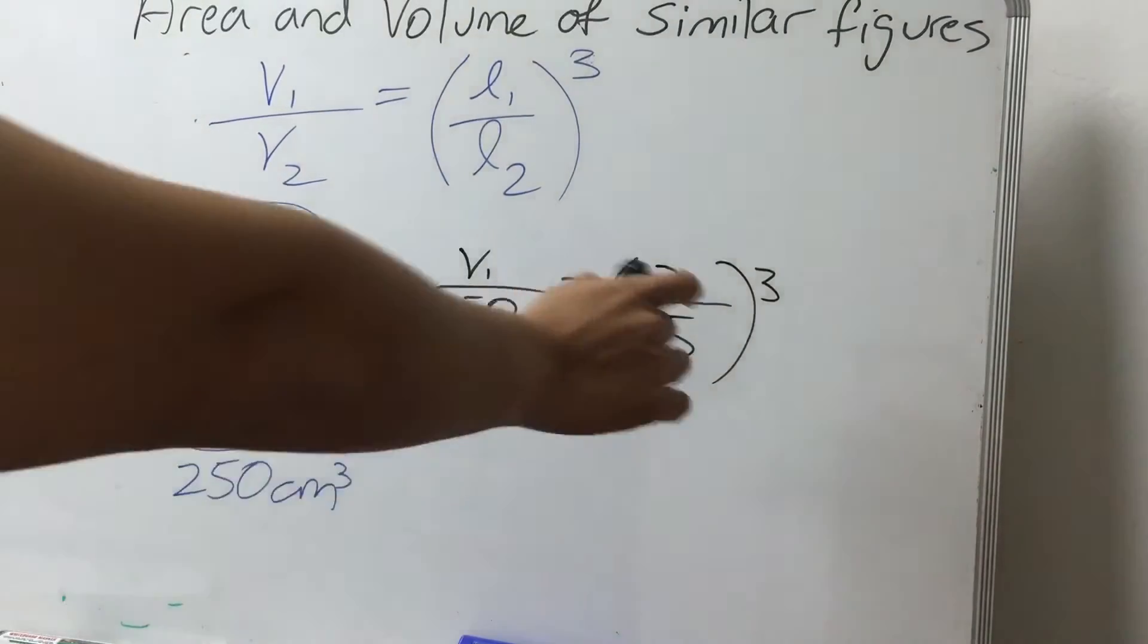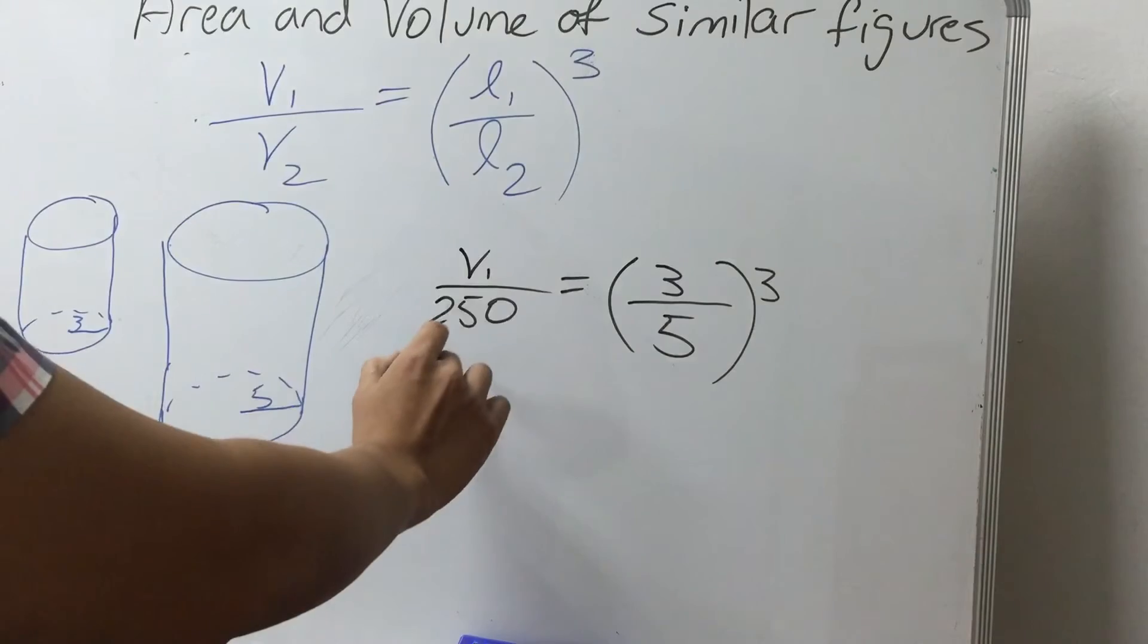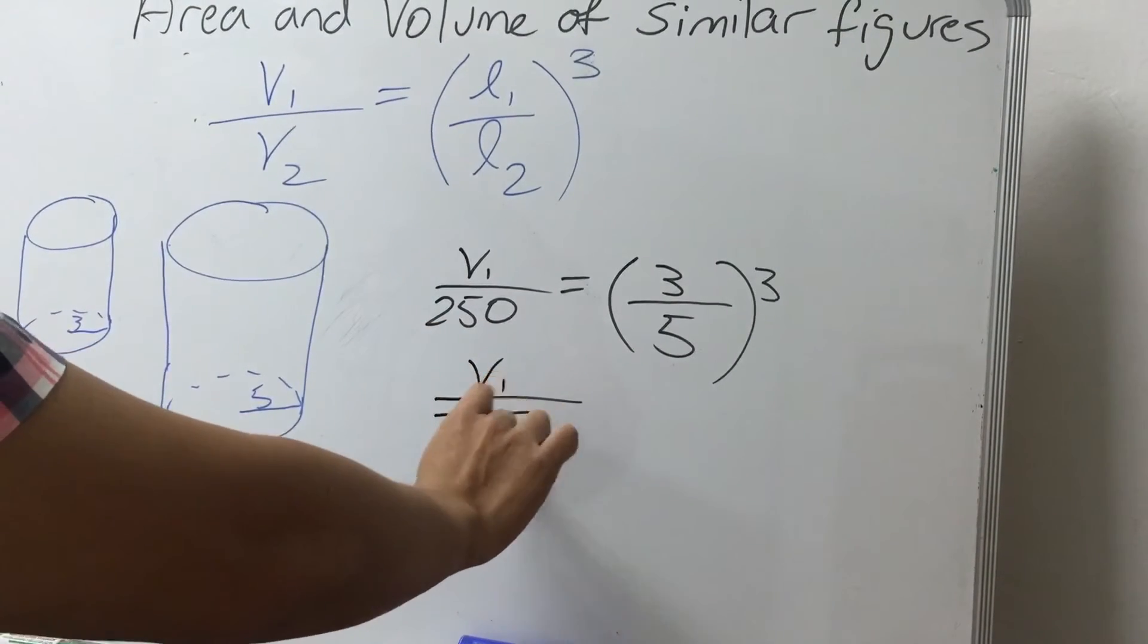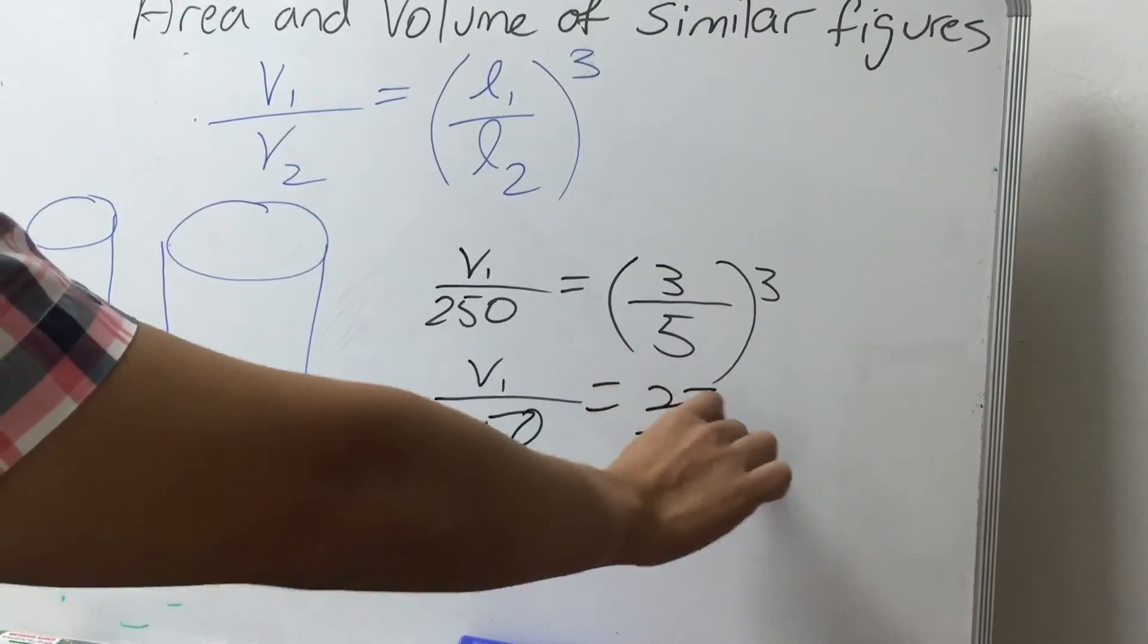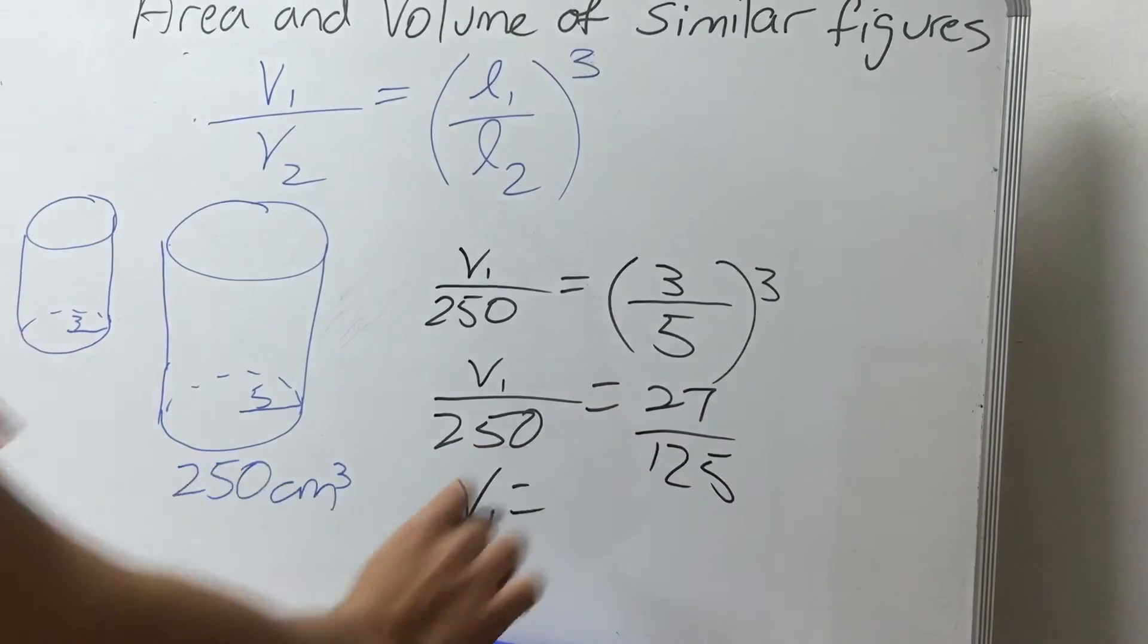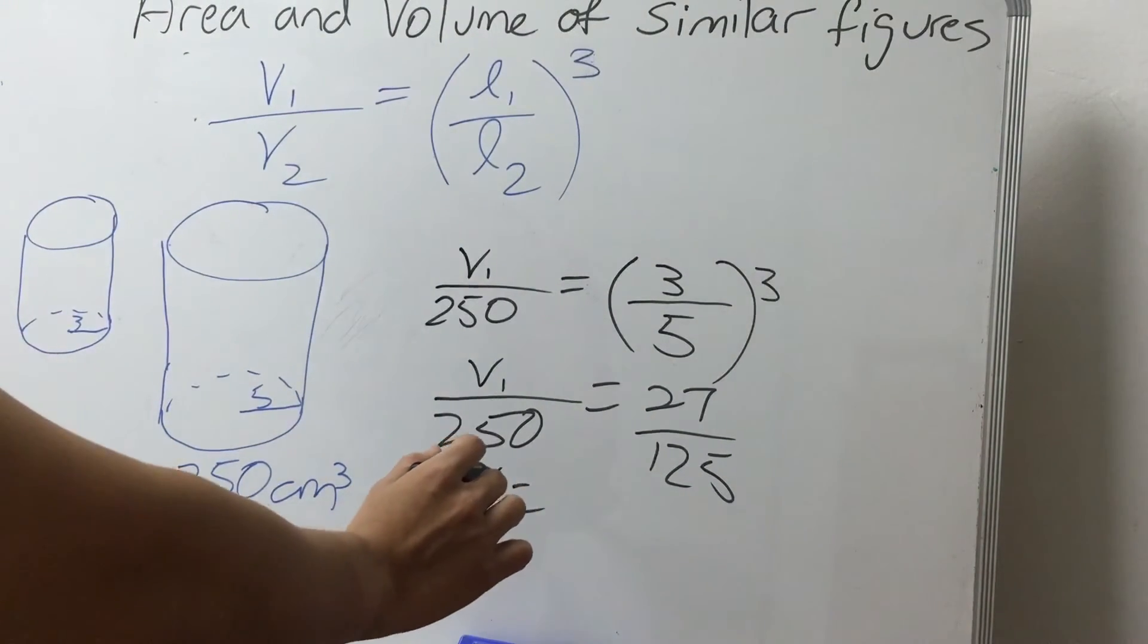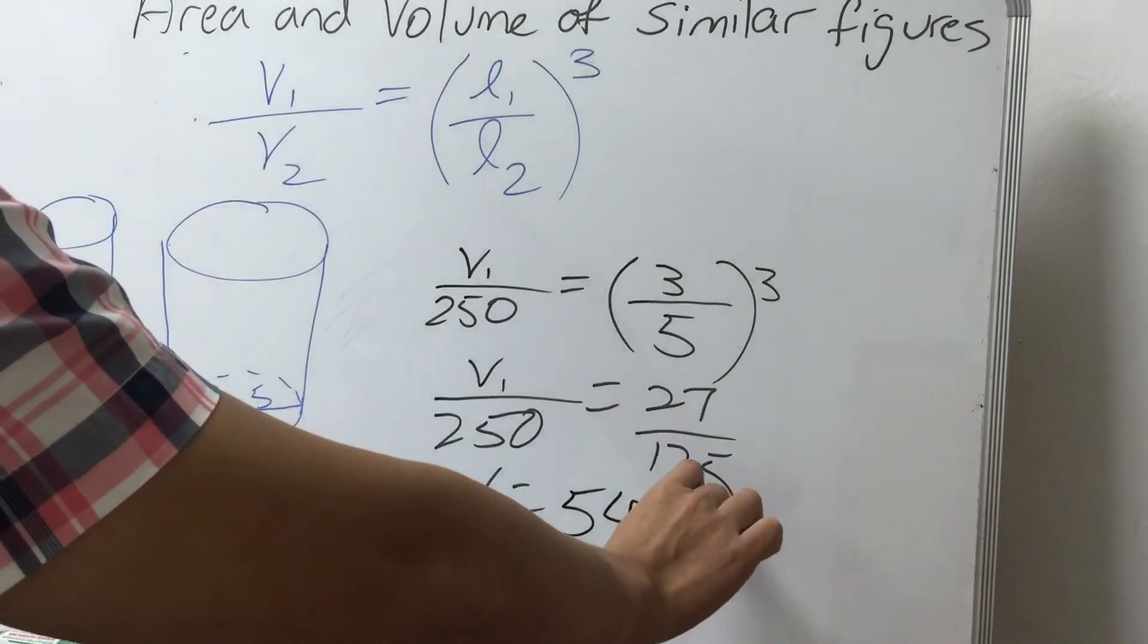Remember, for volume, the ratio is the power of cube. So we can simplify this to find V₁. V₁ over 250 equals to 27 over 125. So V₁ equals to 27 over 125 times 250, and you will get 54 cm cubed.